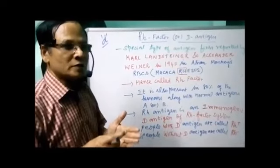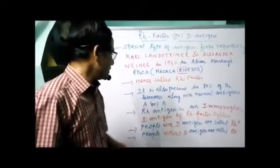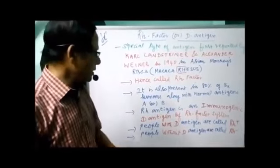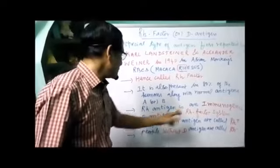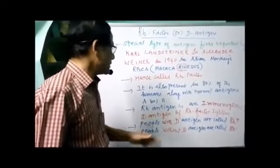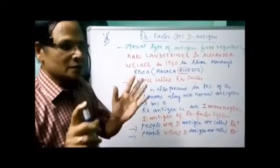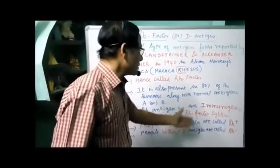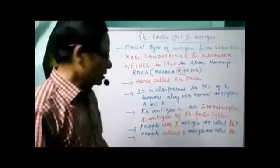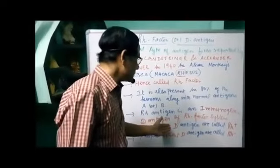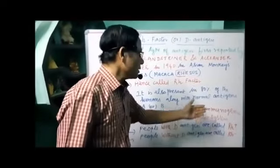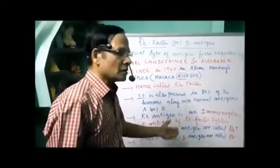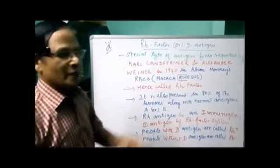So immunogenic means it normally stimulates the production of antibodies. Hence this is called the immunogenic D antigen of the Rh factor system. People with D antigen are called Rh positive, and people without D antigen or Rh factor are called Rh negative.